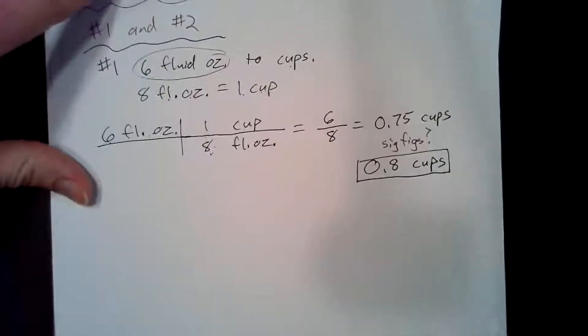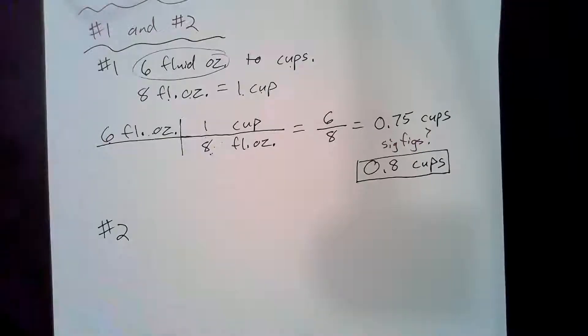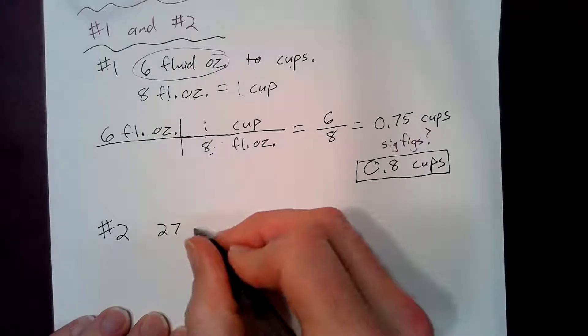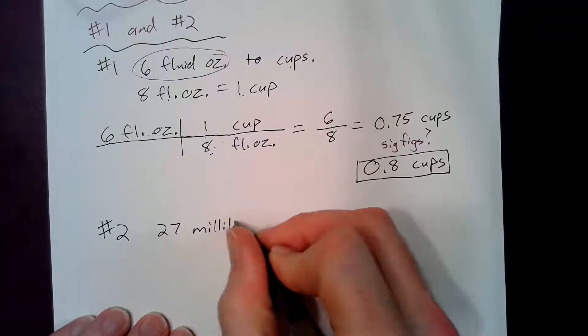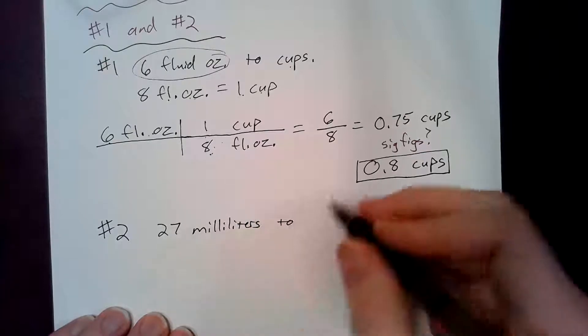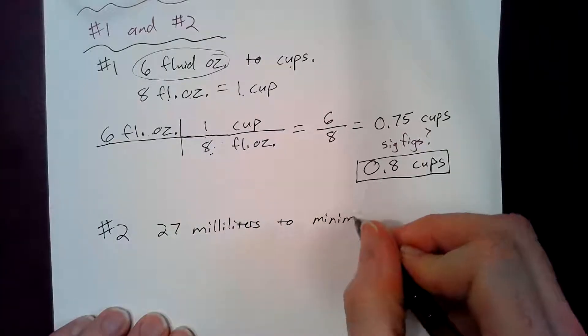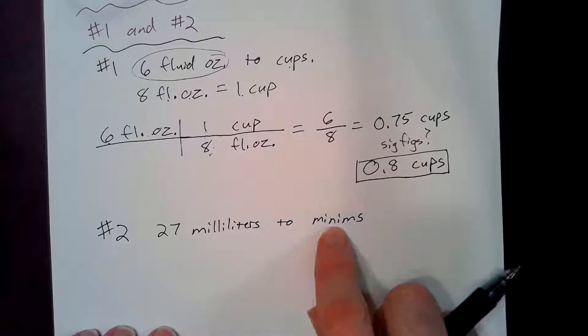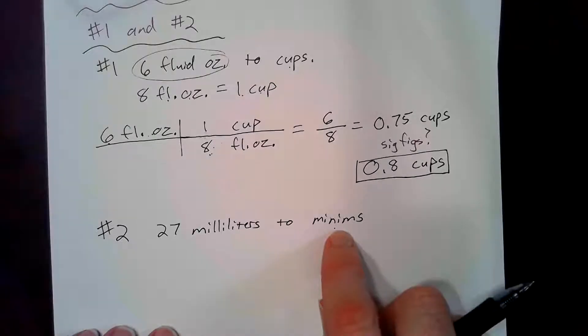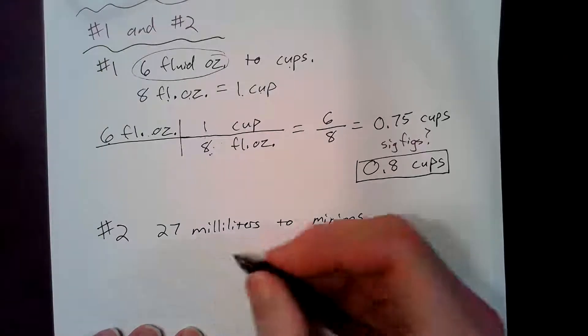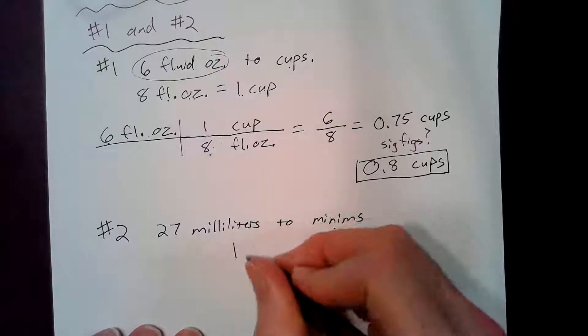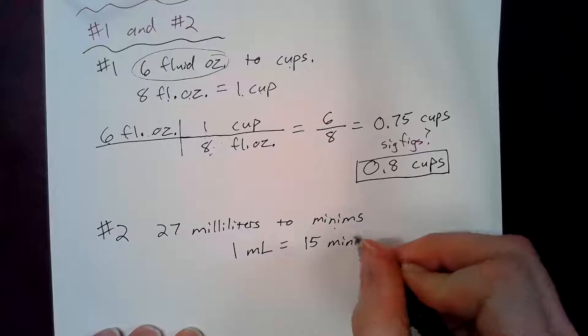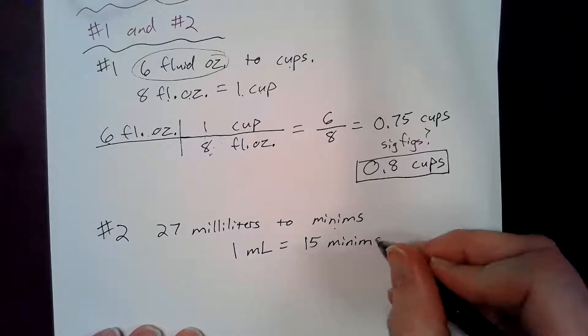Now let's do number two. I ask you to convert twenty seven milliliters to minims. I have never heard of a minim before but apparently it does exist. You guys might have to get used to seeing things you don't recognize but trying to work with it. It is on the conversion chart and when I see it I find out that one milliliter equals fifteen minims.